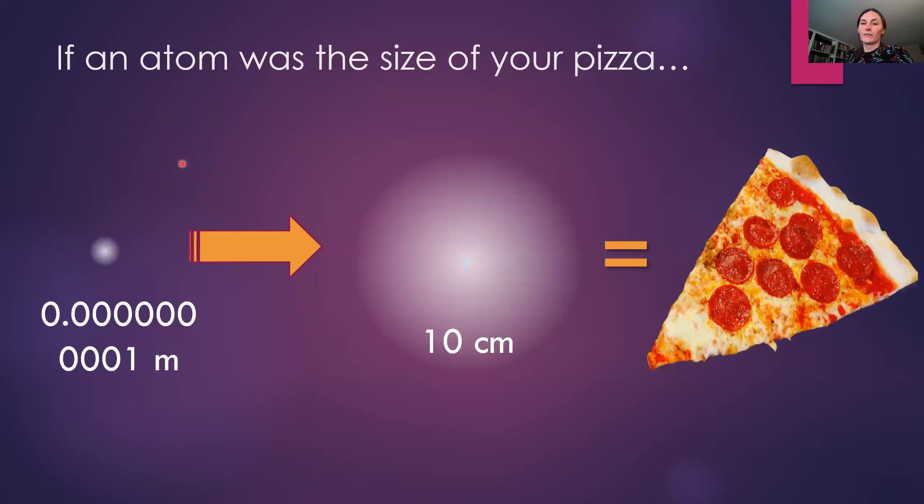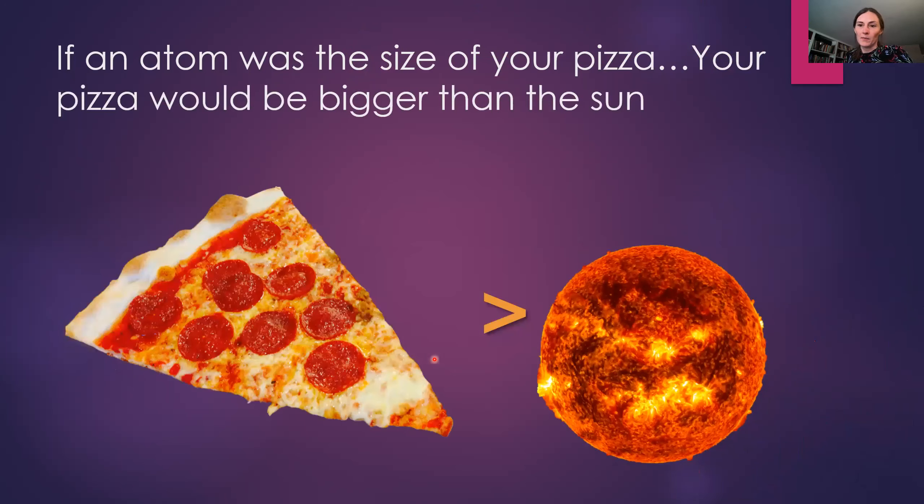Now just for a sense of scale, here's an atom and here's the approximate scale in meters of how big an atom is. Now if we scaled everything up, so say an atom, let's make an atom about the size of a piece of pizza. Now we scale the pizza up in proportion to how much we scaled the atom. The pizza would end up being bigger than the sun. So this is how tiny this world is that we study and try to probe.